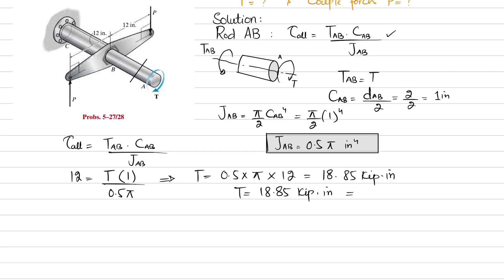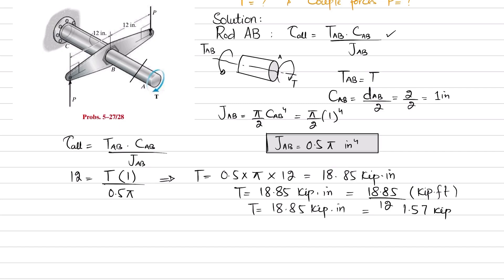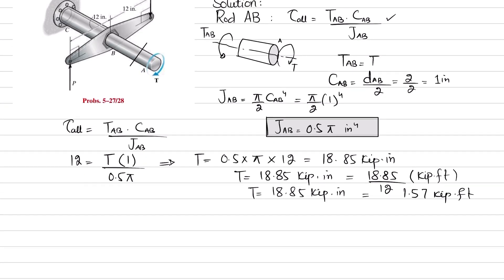To convert T into kip·feet, we divide 18.85 by 12. So T equals either 18.85 kip·inch or 1.57 kip·feet. This is the value of the applied torque.